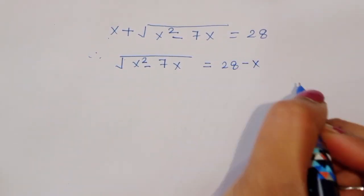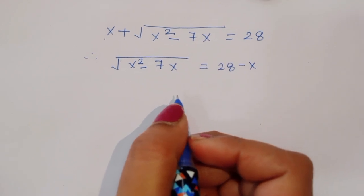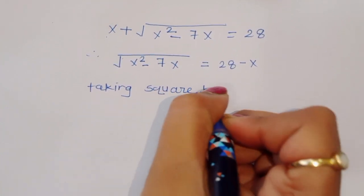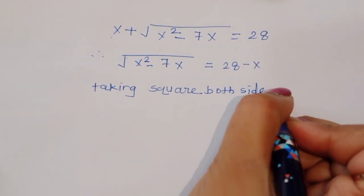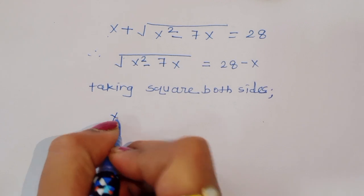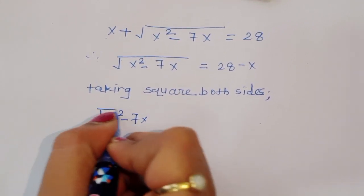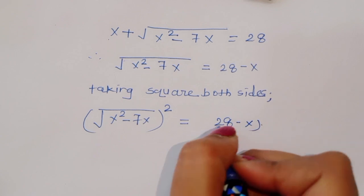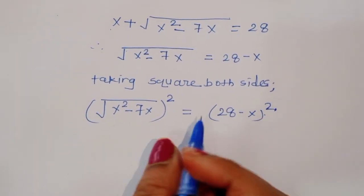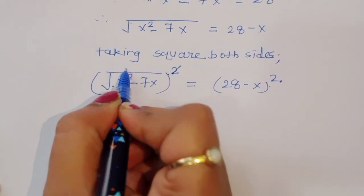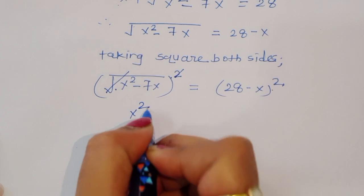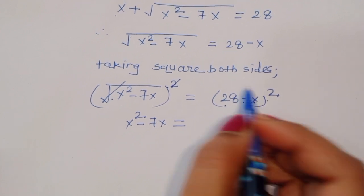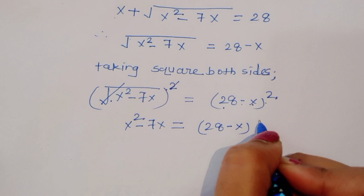Now we can write this: square root of x squared minus 7x is equal to 28 minus x. Now taking square of both sides to remove the square root: x squared minus 7x whole square root, whole square, is equal to 28 minus x whole square. The square and square root cancel, giving us x squared minus 7x is equal to 28 minus x whole square.